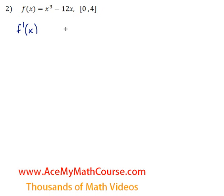To do that, we're going to take the derivative of f of x and set it equal to 0. The derivative of x cubed is 3x squared. The derivative of minus 12x is minus 12.